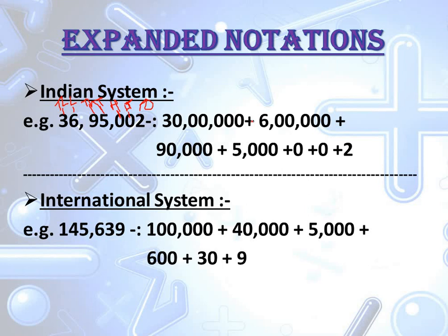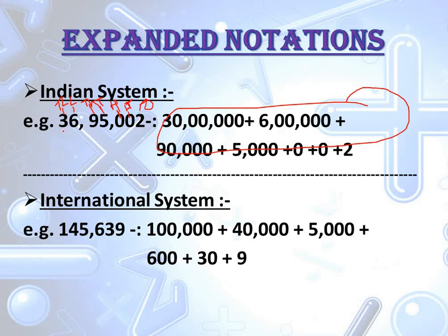6 is at the lakh place, so I write 6 lakh. Then plus. 9 is at the 10,000 place, so I write 90,000. Plus. 5 is at the 1,000 place, so its place value is 5,000. Then at the 100's place there is nothing, so I write 0. At the 10's place there is nothing, so again I write 0. At the 1's place there is 2, so plus 2. When you add all of this, you will get the same original number.